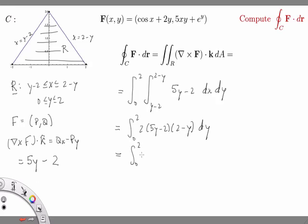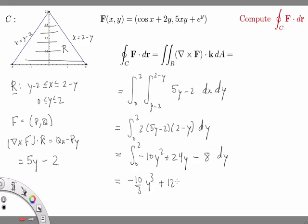Multiplying out, we get negative 10y squared plus 24y minus 8 — since 2y plus 10y times 2 gives 24y, and minus 2 times 2 times 2 gives minus 8. Integrating this quadratic, we get negative 10 over 3 times y cubed plus 12y squared minus 8y, evaluated from 0 to 2.